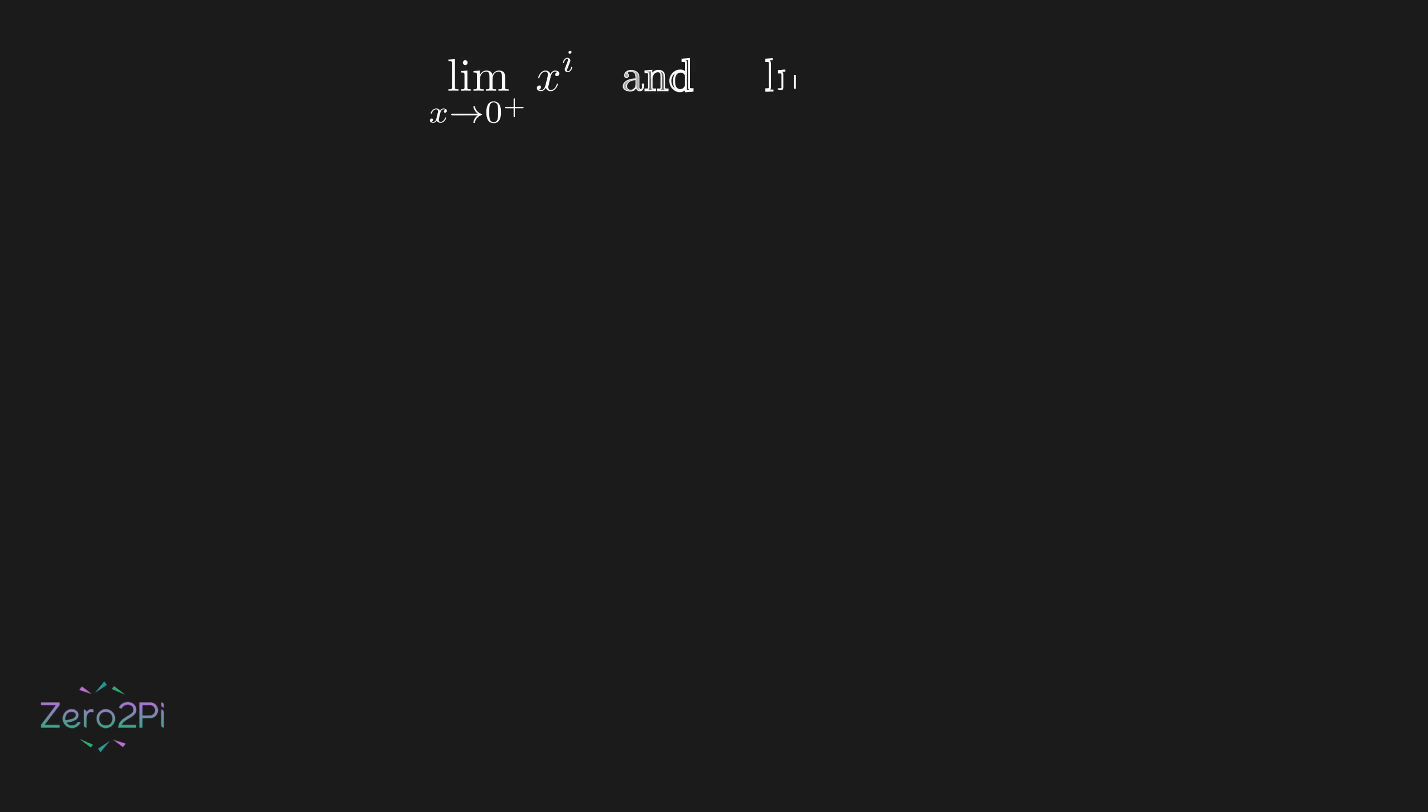Now it's time to see this in action. On the left, we have our number x approaching zero along the positive real axis. On the right, we're plotting x power i on the complex plane. Watch that as x gets smaller and smaller, x power i starts spinning around the unit circle. It never settles. It never stops. It just keeps oscillating infinitely around the circle.